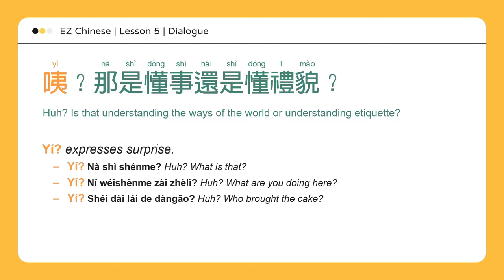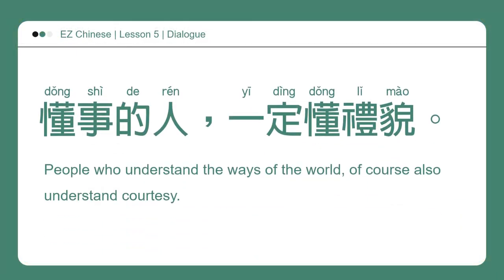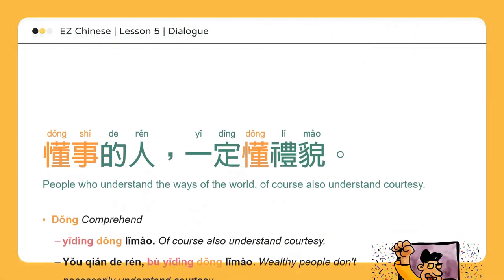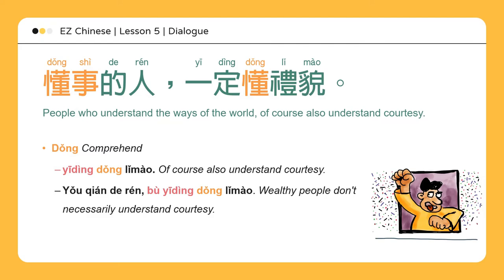咦，谁带来的蛋糕？Who brought the cake? 懂事的人一定懂礼貌。People who understand the ways of the world of course also understand courtesy. 懂 means to comprehend. 有钱的人不一定懂礼貌。Wealthy people don't necessarily understand courtesy.